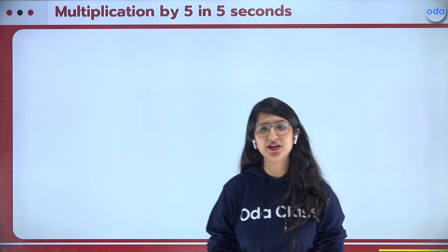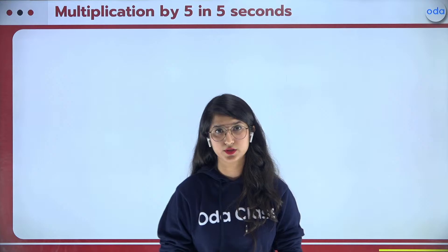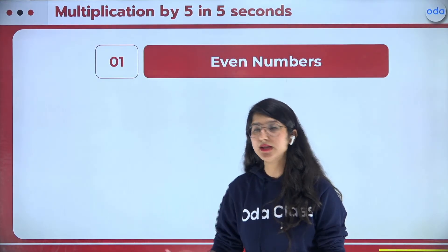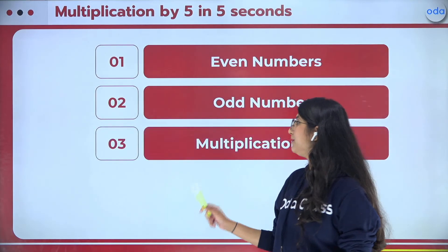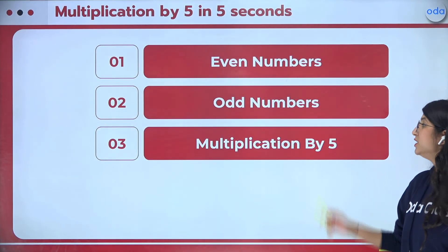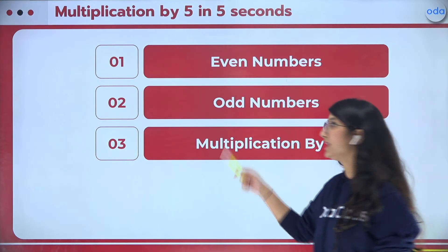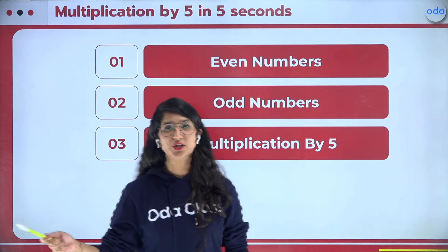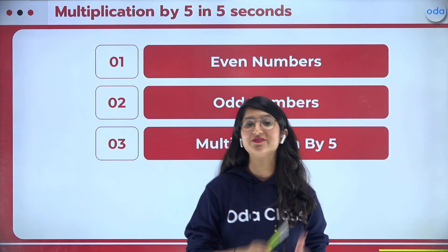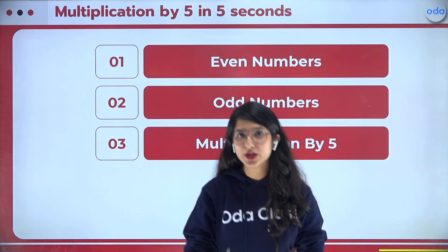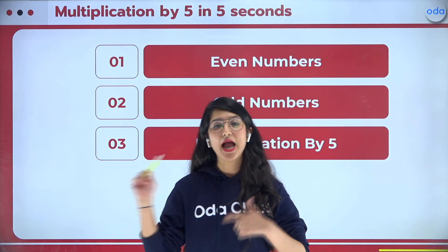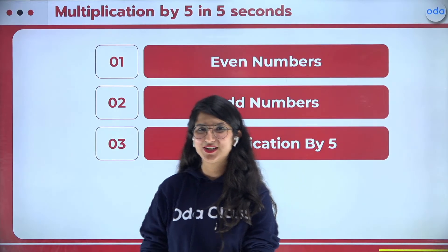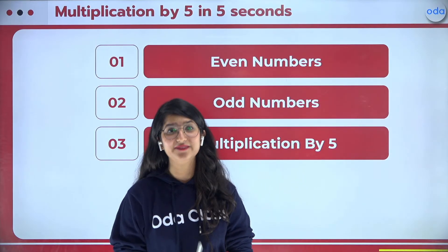Let us have a quick look at what we are going to learn today. We are going to learn about even numbers, odd numbers, and multiplication by 5. You must be wondering why we need even and odd numbers to learn the multiplication trick by 5 — this is the magic!